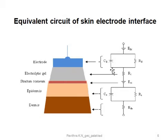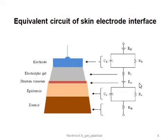The equivalent circuit of the total setup — skin, contact resistance, and electrode — is shown here. RS represents the effective resistance of the gel placed between the electrode and the skin. The epidermis layer of the skin may be considered as a semipermeable membrane, and the potential difference across it is represented by ESC. The epidermal layer also has an electrical impedance represented by the parallel circuit CE and RE.